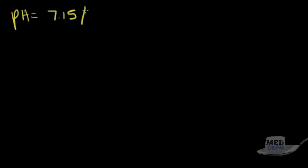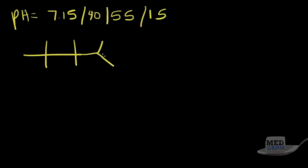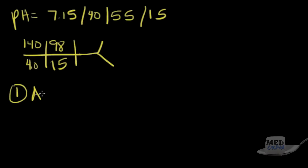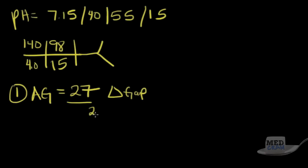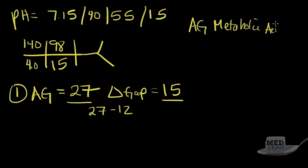Next question: pH is 7.15, pCO2 is 40, O2 is 55, bicarb is 15. CHEM7 shows sodium 140, potassium 4.0, chloride 98, bicarb 15. First step — anion gap: 98 plus 15 is 113; 140 minus 113 equals 27. The anion gap is elevated at 27, and the delta gap is 27 minus 12, which equals 15. We immediately know we have an anion gap metabolic acidosis.